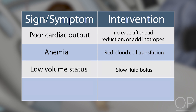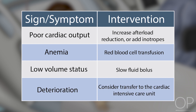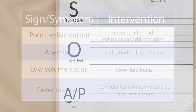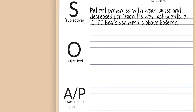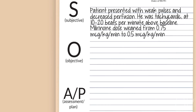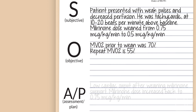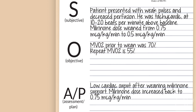If he appears to have poor cardiac output, you could consider increasing afterload reduction or adding inotropes; if he's anemic, consider transfusion of red blood cells; if he has low volume status, consider a slow fluid bolus; and if you're worried he may get sicker, consider transfer to the cardiac ICU. In this case, his pulses were weaker and perfusion was worse than baseline. His heart rate was up 10 to 20 beats from baseline, and his milrinone had been weaned earlier from 0.75 to 0.5. His mixed venous prior to the wean was 70%; a repeat was now 55%. The transplant attending was called, milrinone was increased back to 0.75, and the CICU attending was alerted.